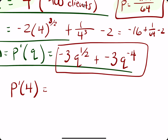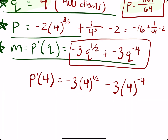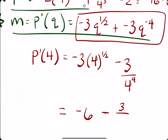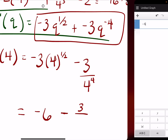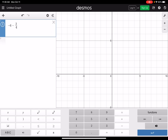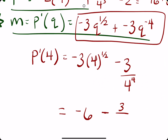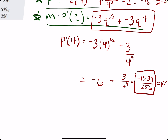Our q is 4, so we plug in 4. We have negative 3 times 4 to the 1/2 minus 3 over 4 to the 4th. 4 to the 1/2 is the square root of 4, which is 2, times negative 3 is negative 6. Minus 3 over 4 to the 4th — rewriting 4 to the negative 4 in the denominator. We get negative 1539 over 256. This is our p prime, which is also our slope of the tangent line.